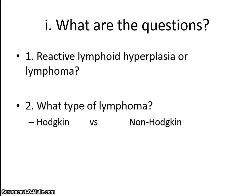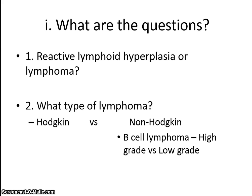Now what we'll be dealing with in extra nodal sites, such as the orbit, is almost always going to be a non-Hodgkin lymphoma. And we further subtype it into B-cell lymphomas, which may be of high or low grade, or T-cell lymphomas, which are much less common than B-cell lymphomas. So the commonest lymphoma that you will be dealing with will be a B-cell lymphoma.